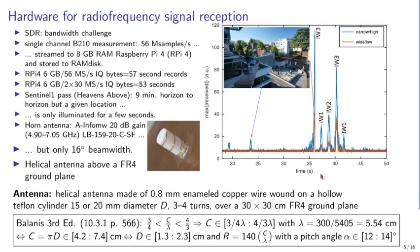We decided to collect raw data from Sentinel-1. Initially we started with a horn antenna — a rather fancy antenna at about a thousand dollars. At the end of the day, you only need a helical antenna as described in Balanis's book.